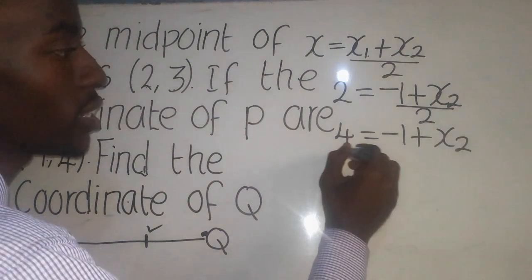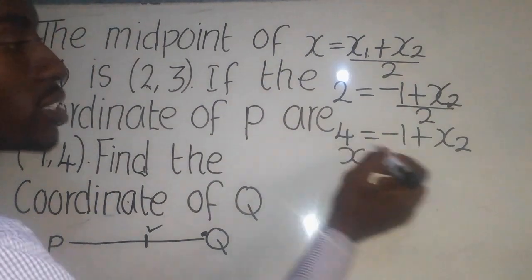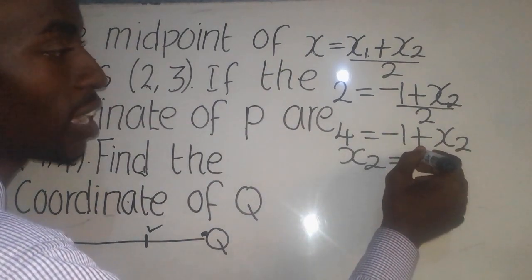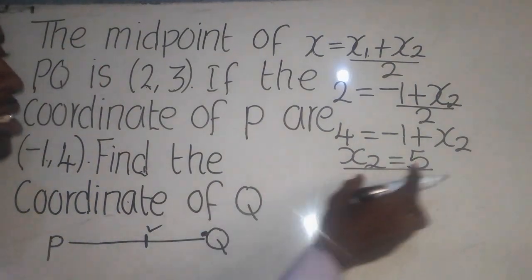So it will be now X2 equal to, when this negative 1 comes to this side, it will give me 5. So the value for X here is 5.